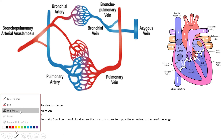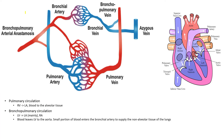In this video we're going to be talking about pulmonary and bronchopulmonary circulation. First, let's talk about pulmonary circulation — this is how blood moves from the right ventricle into the left atrium, supplying blood to the lungs, specifically the alveolar tissue of the lungs.